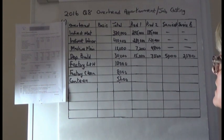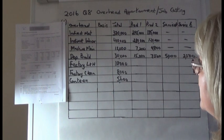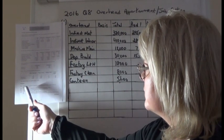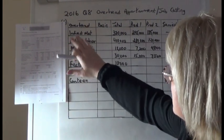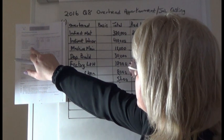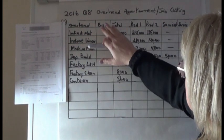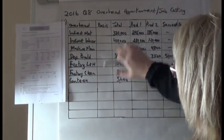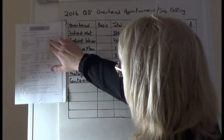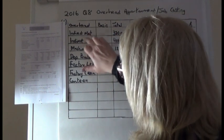I'm going to run through the 2016 question 8 on overhead apportionment and job costing. Part A asks us to calculate the overhead to be absorbed by each department, showing clearly the basis of apportionment used. I've set it up almost the same as the first table given — listing overheads, totals, and the four departments: Production 1, Production 2, Service A and B. I've added an extra column for the basis of apportionment.